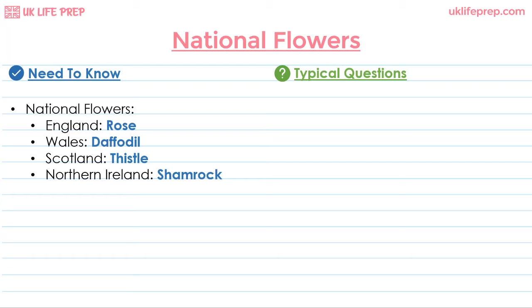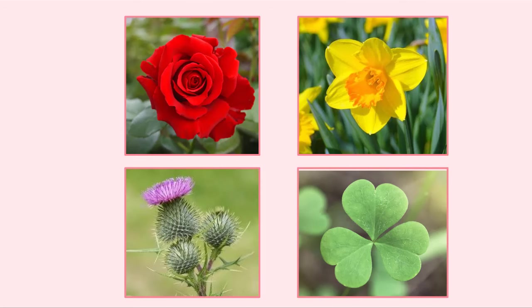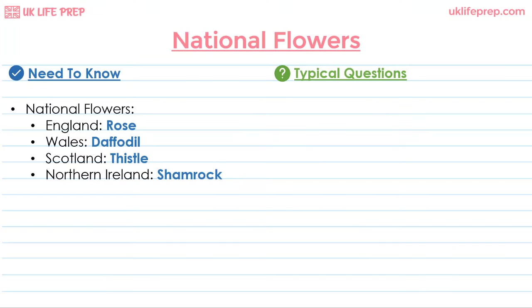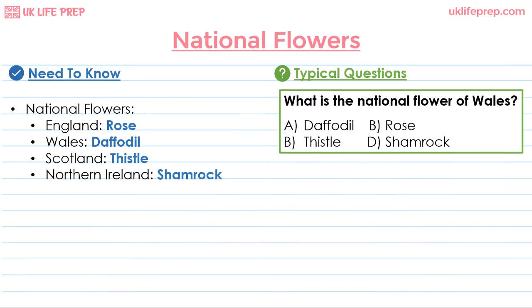The final most common question is about national flowers. The national flower of England is the rose, for Wales it is the daffodil, for Scotland the thistle, and for Northern Ireland the shamrock. A typical question reads: what is the national flower of Wales? The answer is the daffodil.